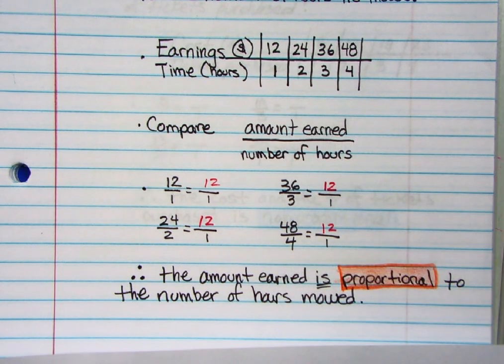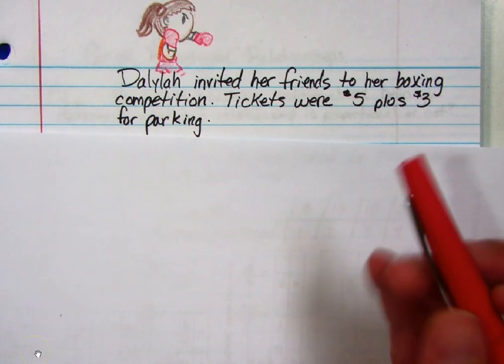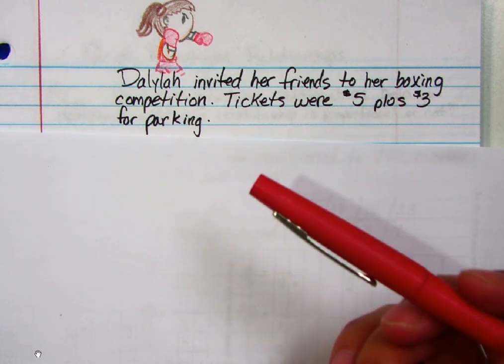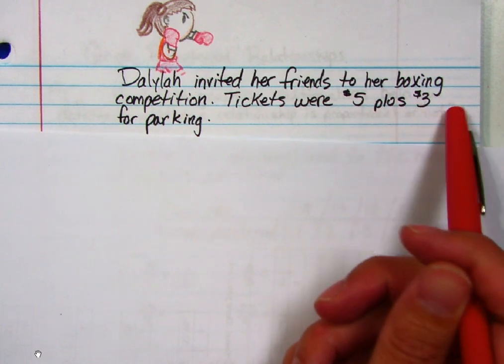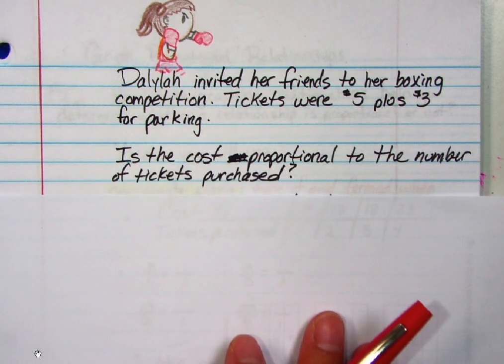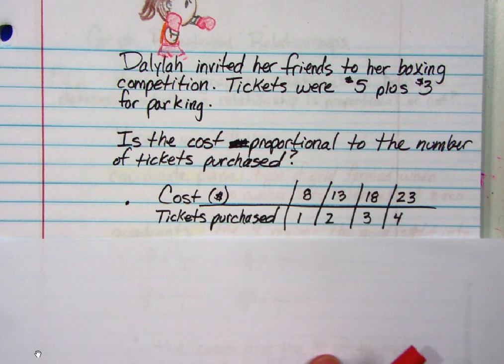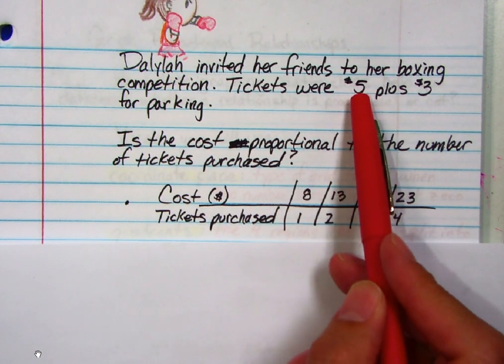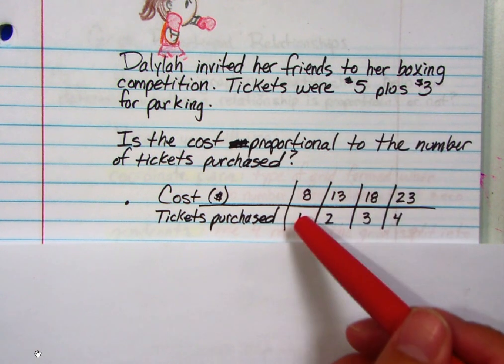And for our last example, it says Delilah invited her friends to her boxing competition. Tickets were five dollars plus three dollars for parking. So is the cost proportional to the number of tickets purchased? So I made a little chart. I said, look, if they're going to buy one ticket, well that's five dollars plus the three dollars for parking. That's eight dollars.